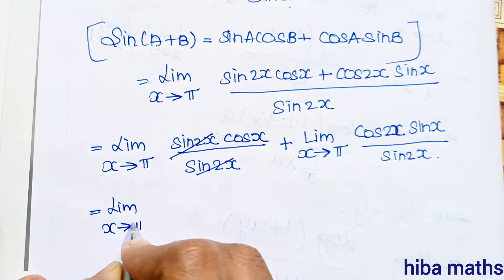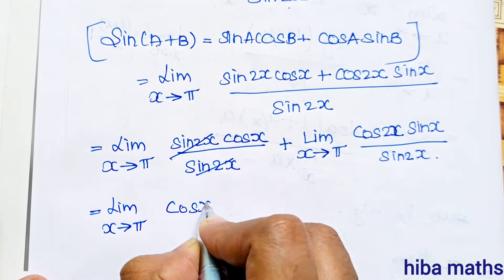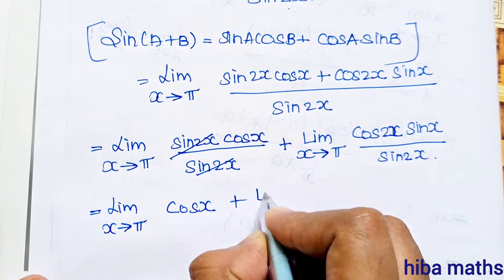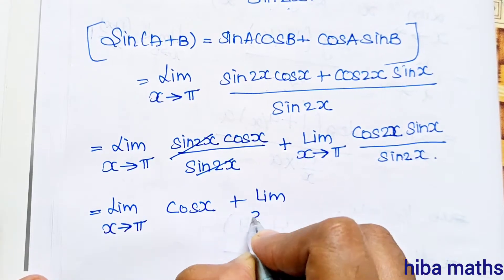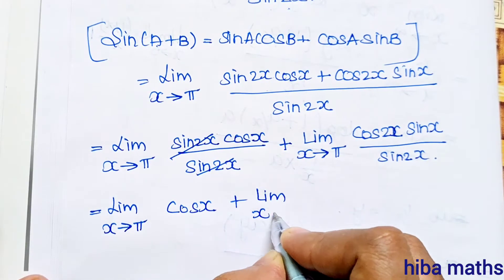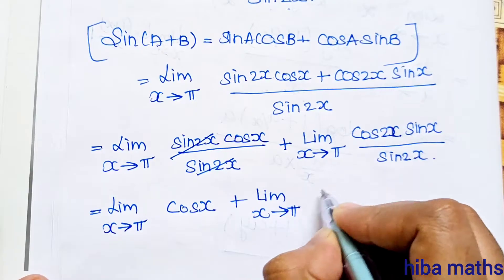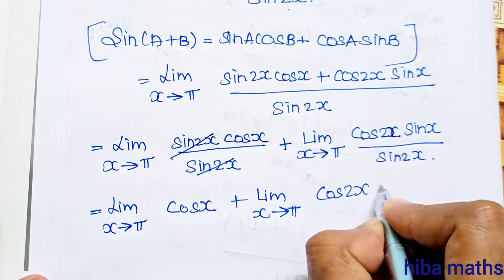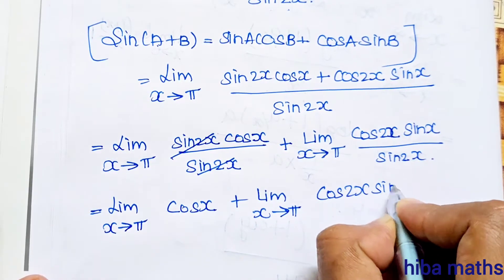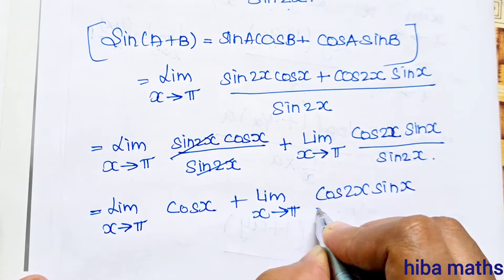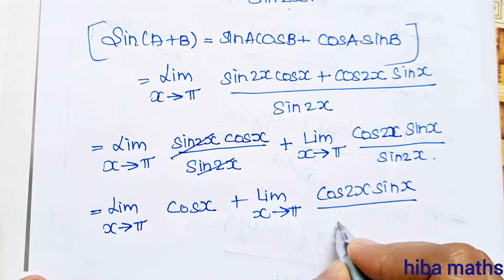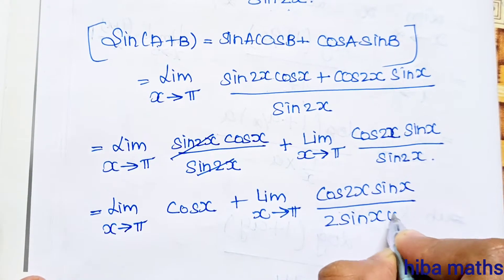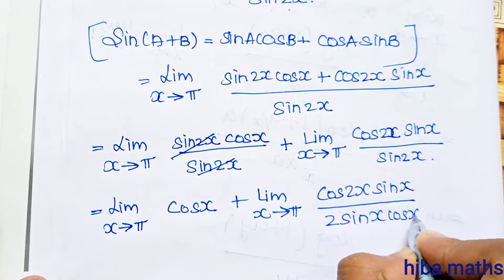After cancellation: limit x turns to pi of cos x, plus limit x turns to pi of cos 2x sin x divided by sin 2x. Since sin 2x is 2 sin x cos x, we substitute that in.